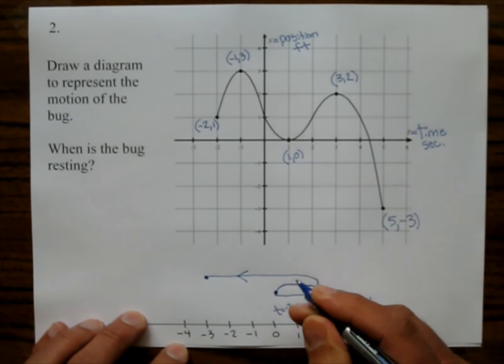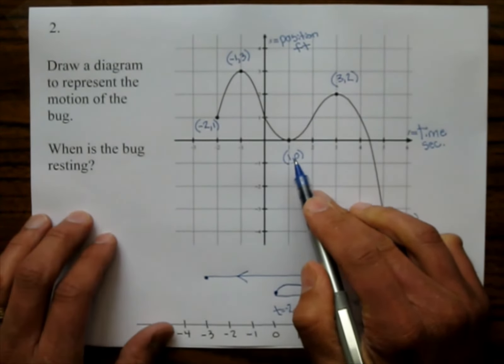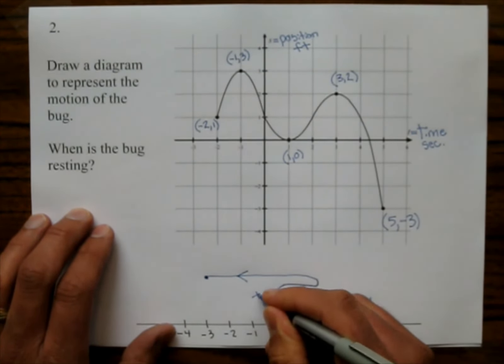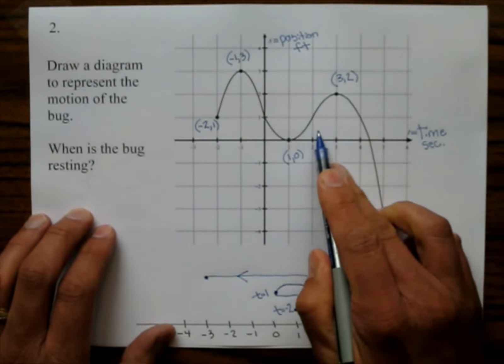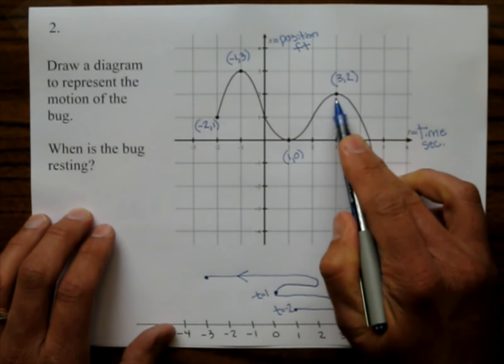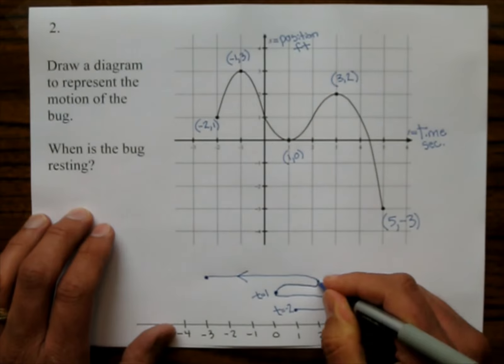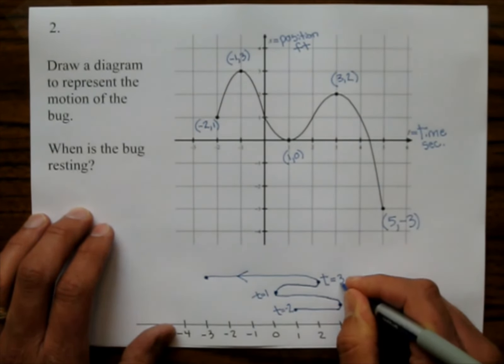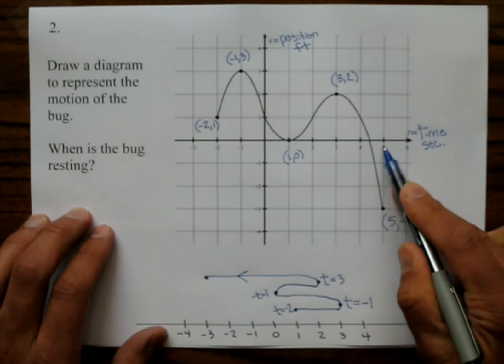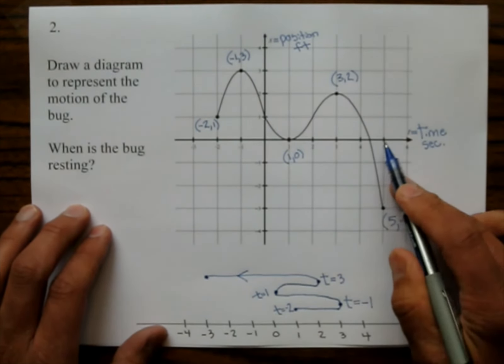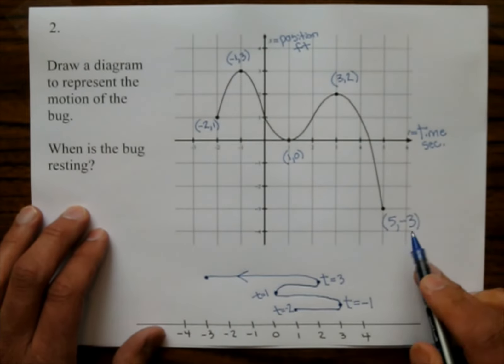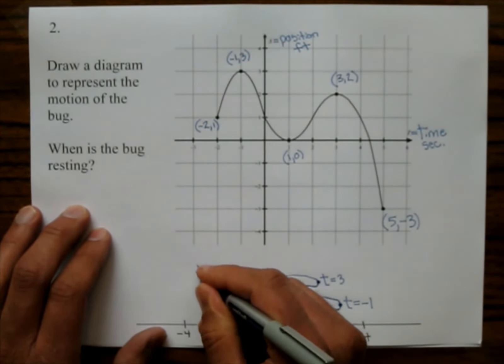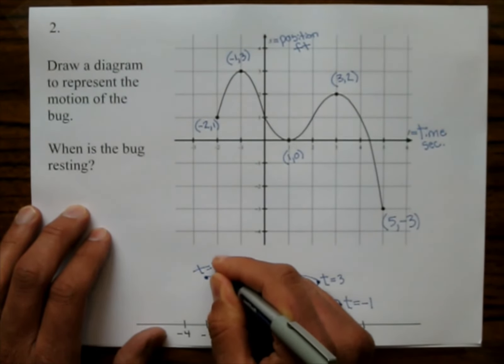So right here at time 0, I mean not time 0, at position 0, his time is 1. So time equals 1. And then he goes to position 2 at time 3. So this is time equals 3. And then he goes to position 5. I said that wrong again. He goes to position negative 3 at time 5. So this is time equals 5.